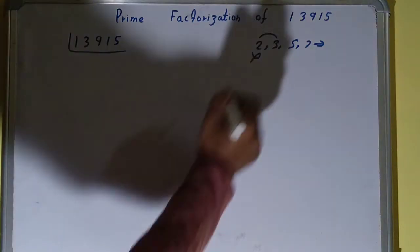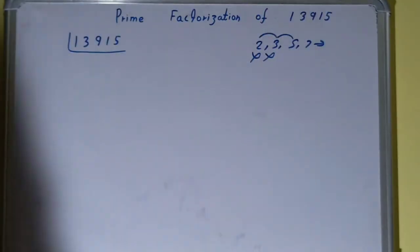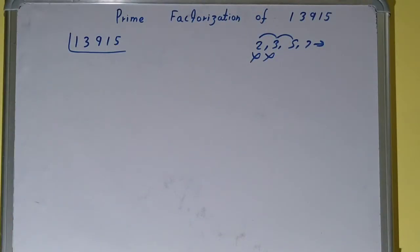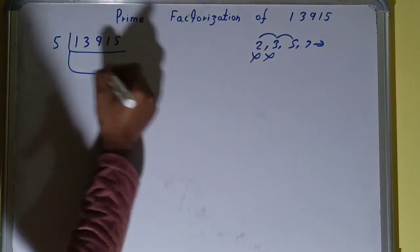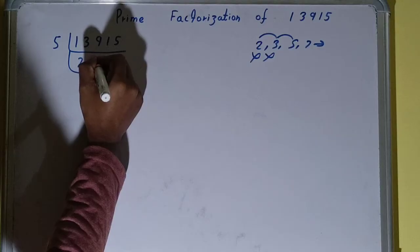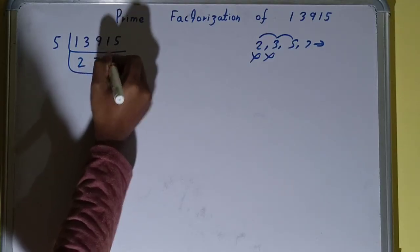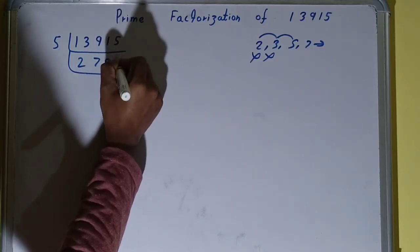Let's check with 5. The last digit is 5, so yes, it is divisible by 5. So divide it. You will be getting 2783.